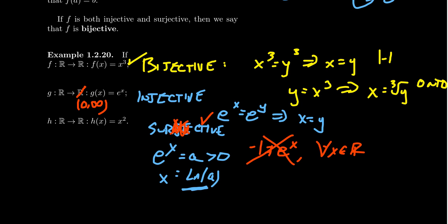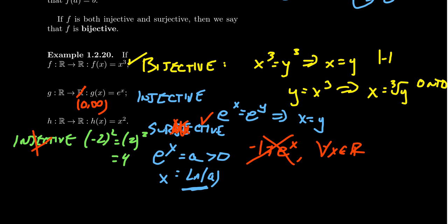One last example: take h(x) = x² as a function from the reals to the reals. In this situation you have similar problems. It's not injective because (-2)² = 2² = 4, so two different real numbers give the same output. It's also not surjective because you can't solve -1 = x² with real inputs — that can't happen. Therefore it's neither surjective nor injective — not one-to-one or onto.